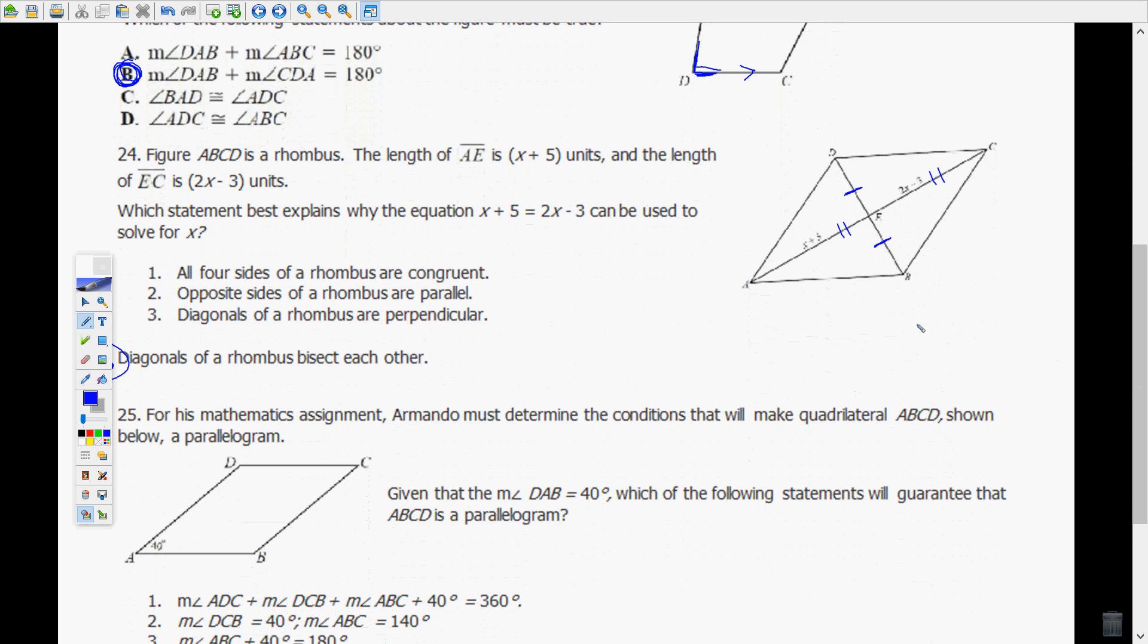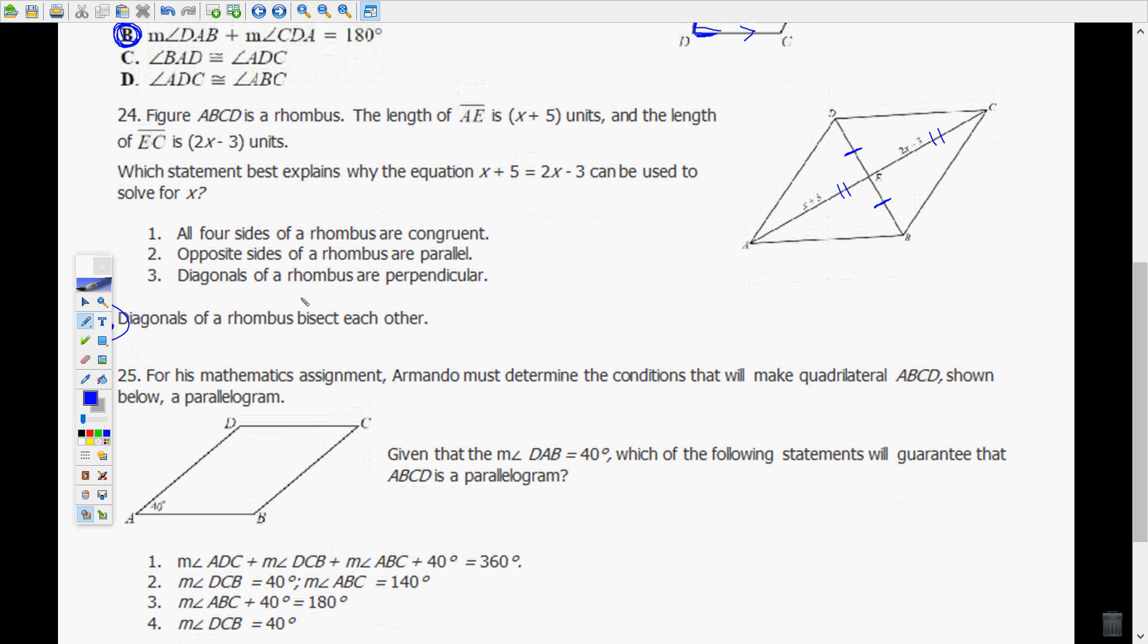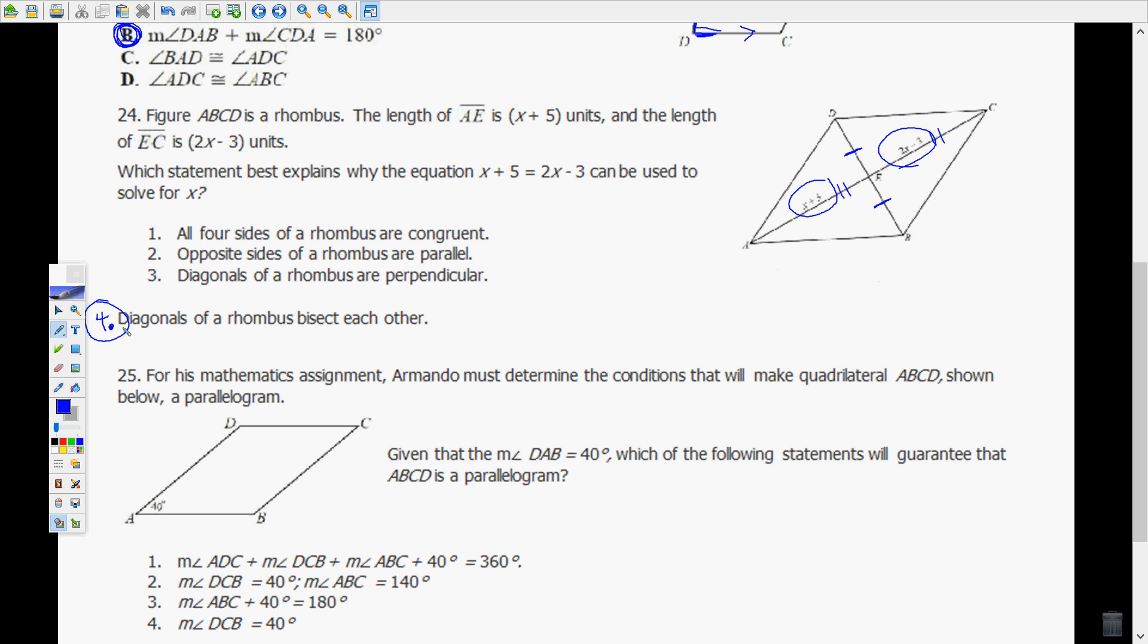Figure ABCD is a rhombus. The length of AE is X plus 5 units. The length of EC is 2X minus 3 units. Which statement best explains why the equation X plus 5 equals 2X minus 3 can be used to solve for X here? In a rhombus the diagonals do bisect each other, and since they bisect each other you can set the pieces equal to each other and solve for X. Diagonals of a rhombus bisect each other, and that is why you can set that equation up. Hope this has been helpful.